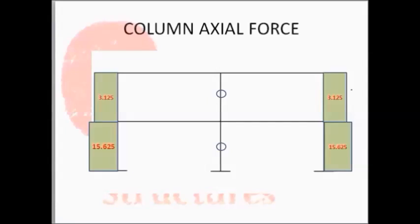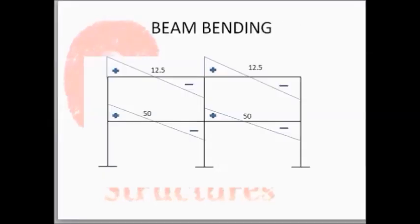For column axial forces, the internal column has axial force of zero, as we already discussed. The pink arrows show the column axial force values for both external columns. There are two different signs for the external columns — one negative and one positive — indicating tension and compression in the columns. For the bending moment diagram for beam or column, the bending moment equals force multiplied by perpendicular distance.